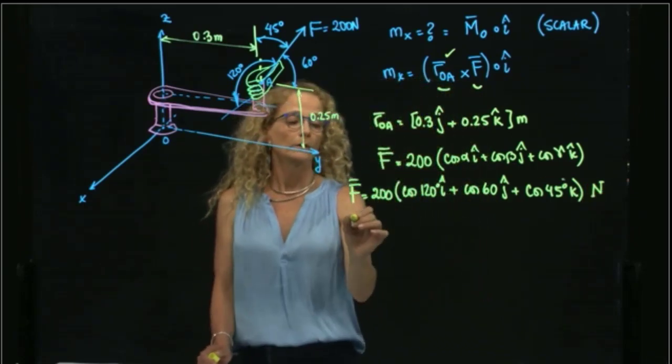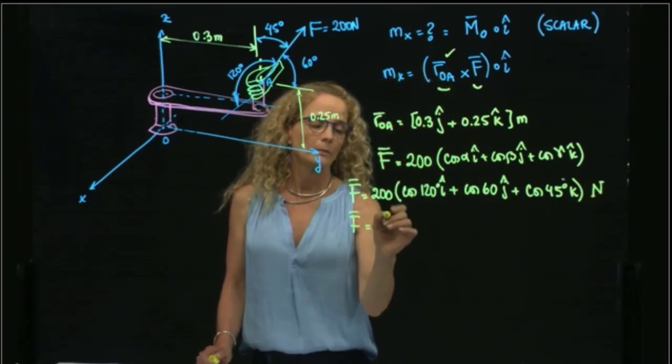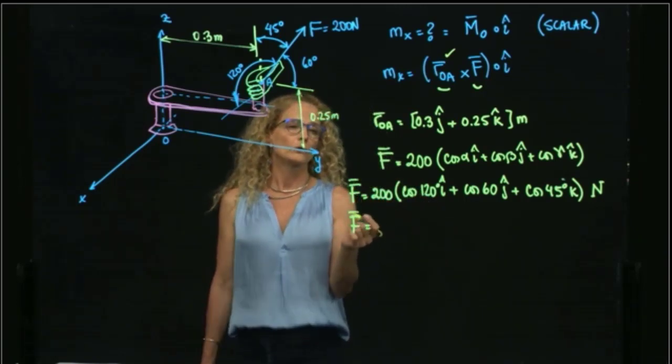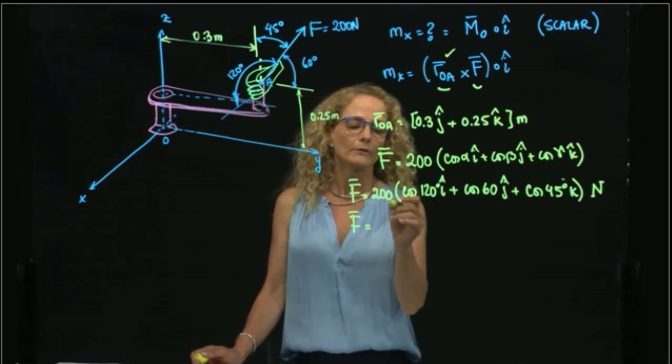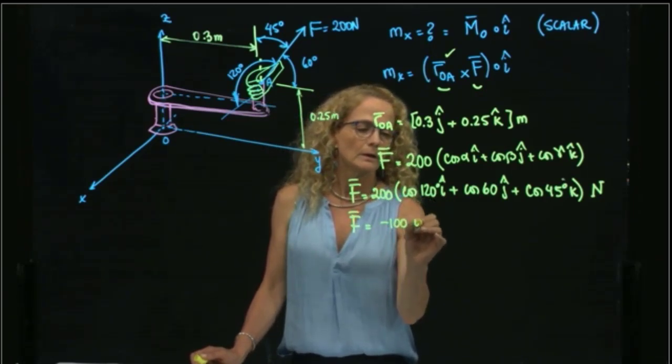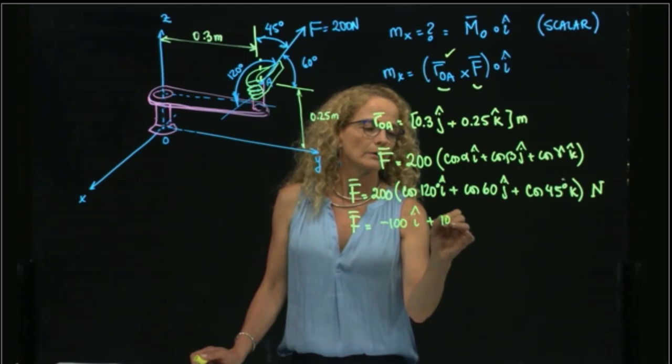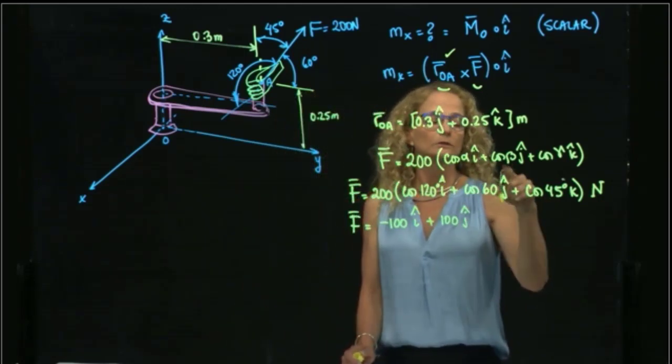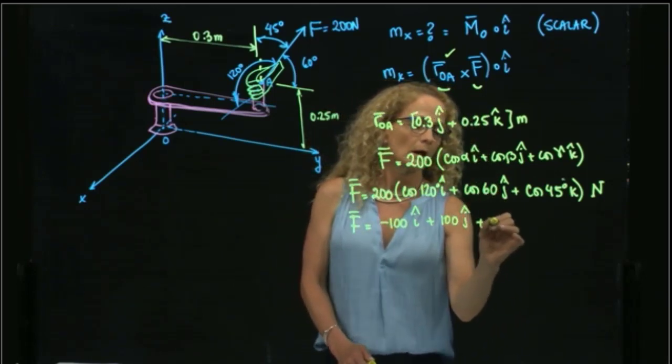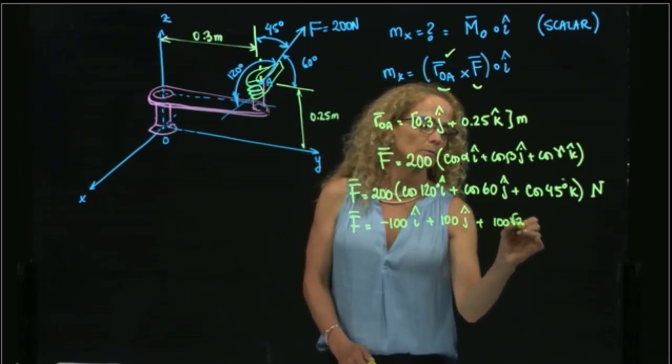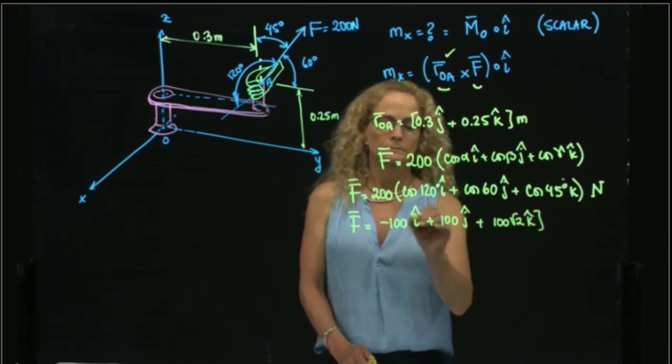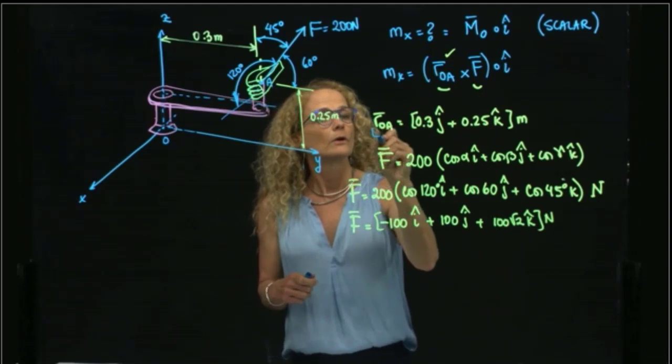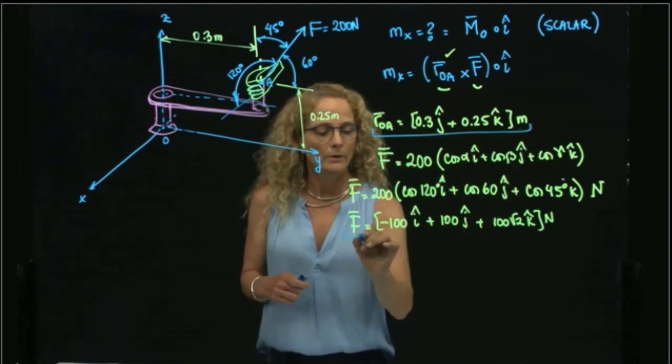And this is in newtons. You remember that the cosine of 120 is negative cosine of 60, which is one-half. Therefore, that gives me negative 100 in I, plus 100 in J. And cosine of 45 is the square root of 2 over 2. So that gives me 100 square root of 2 in K.